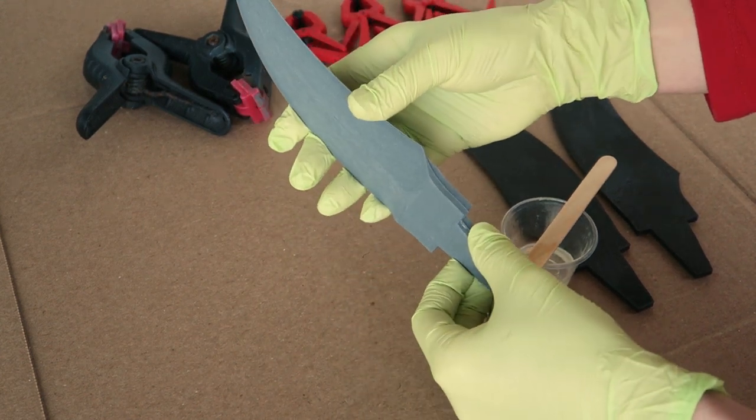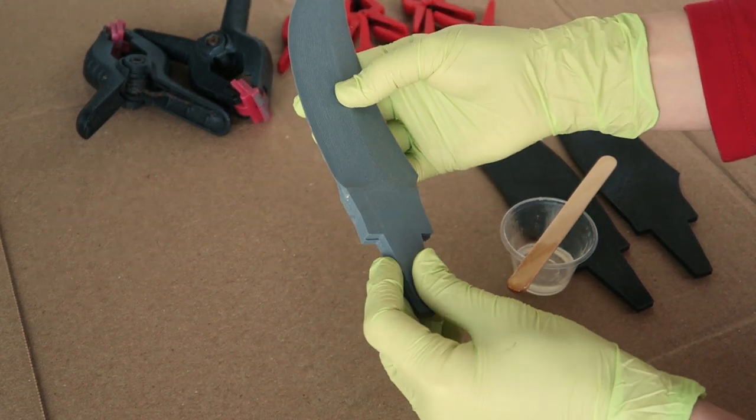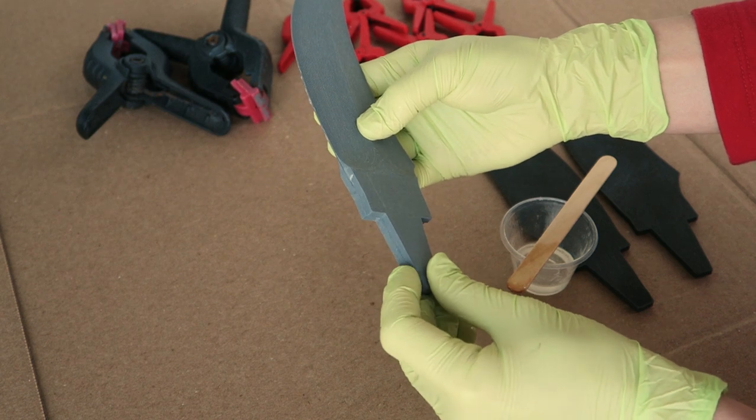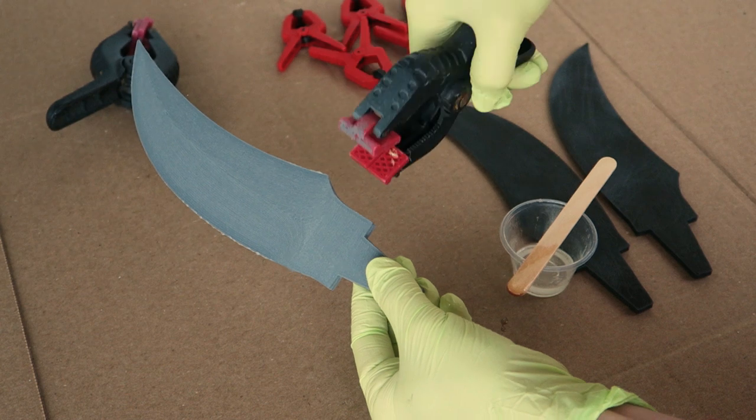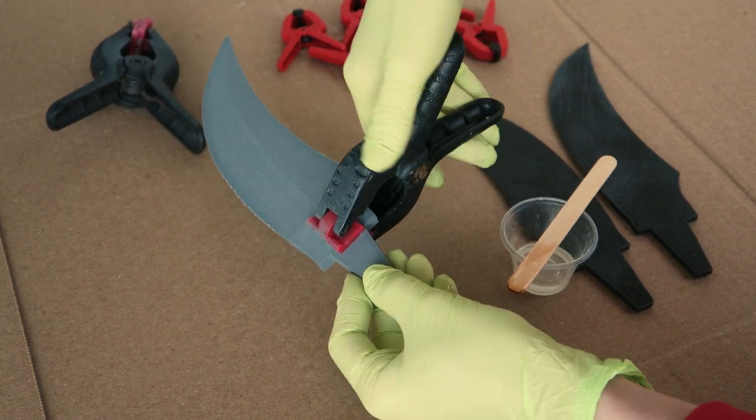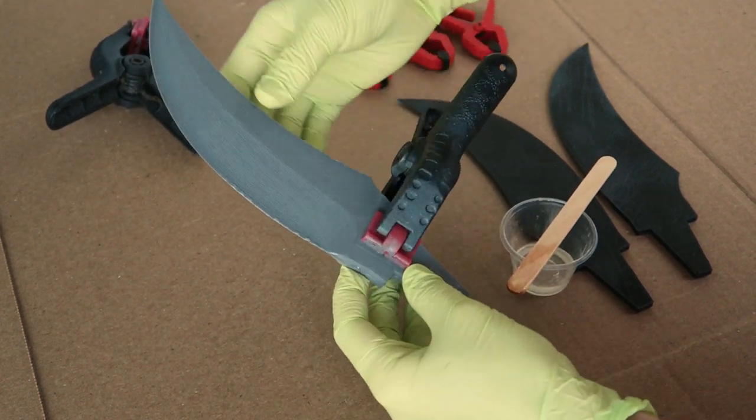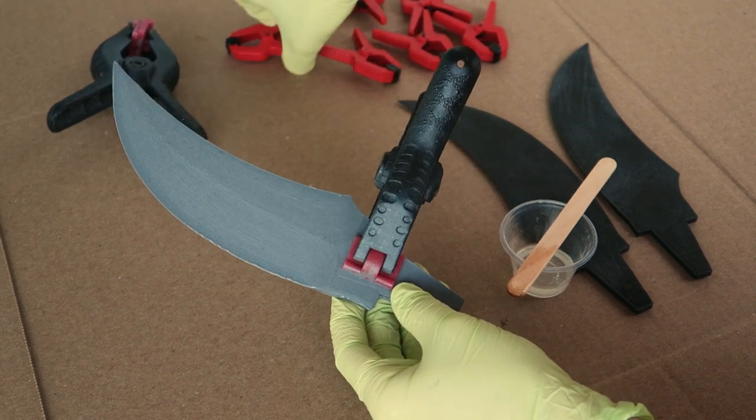I did just the center first and clamped those together and allowed that to cure. Then I also smoothed the outside using more epoxy. I did that in two stages just so that I could ensure the pieces were properly aligned during the joining stage and then focus on just the smoothing for the second part.